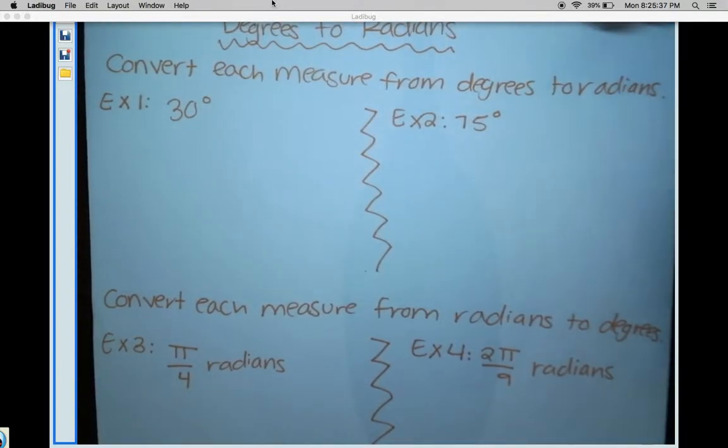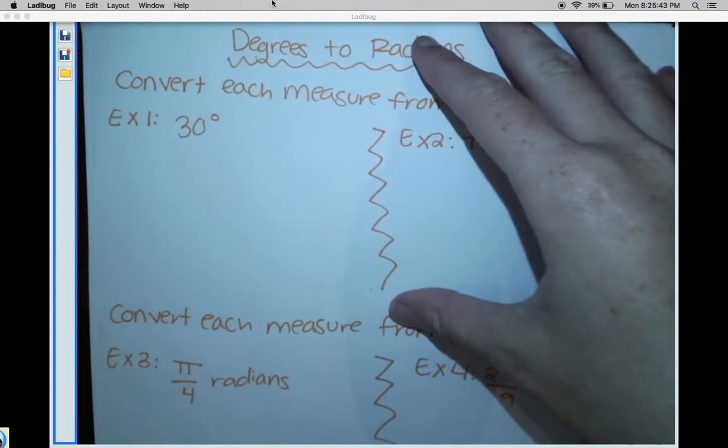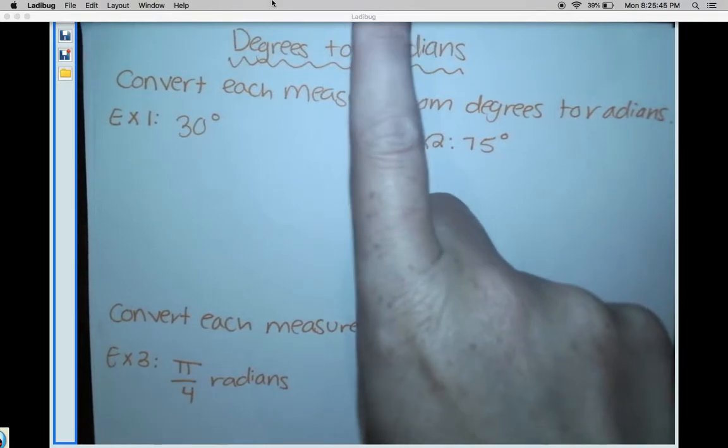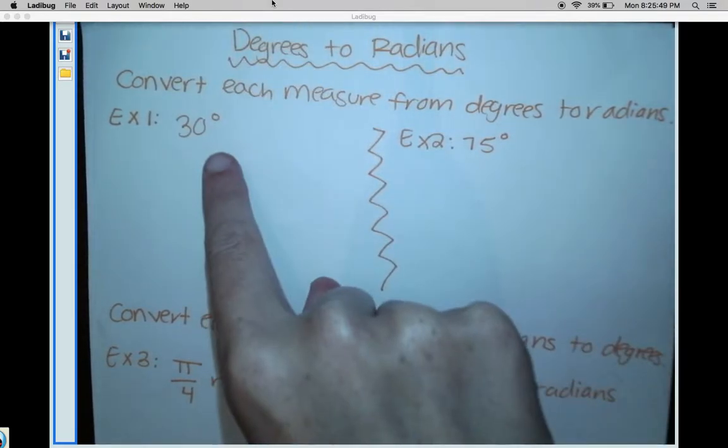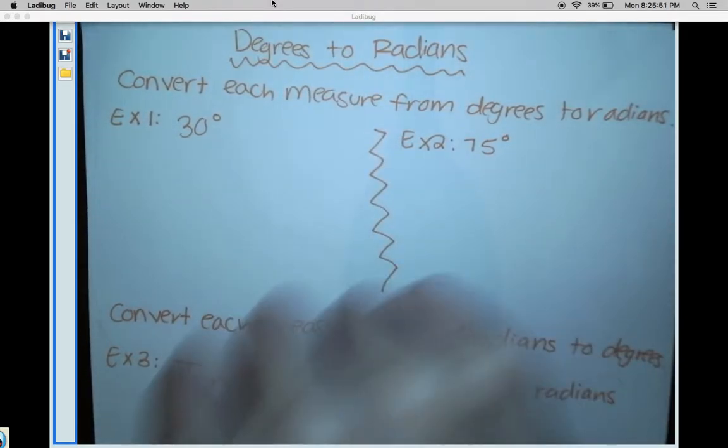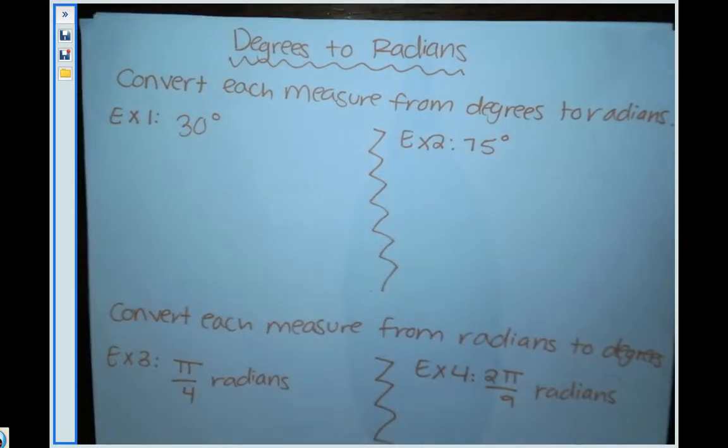Hi everyone, we're going to be learning about how to convert from degrees to radians. If you remember from the Prezi, there are not just one way to measure an angle, there are two ways. One way is with degrees, which is what you're probably used to seeing.